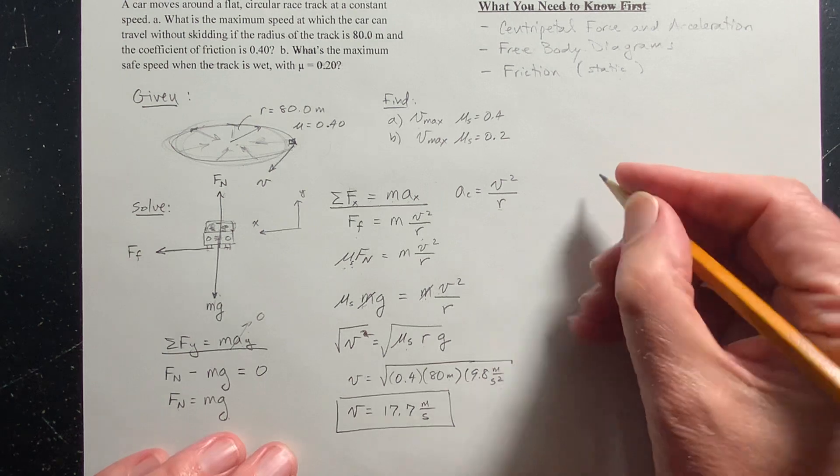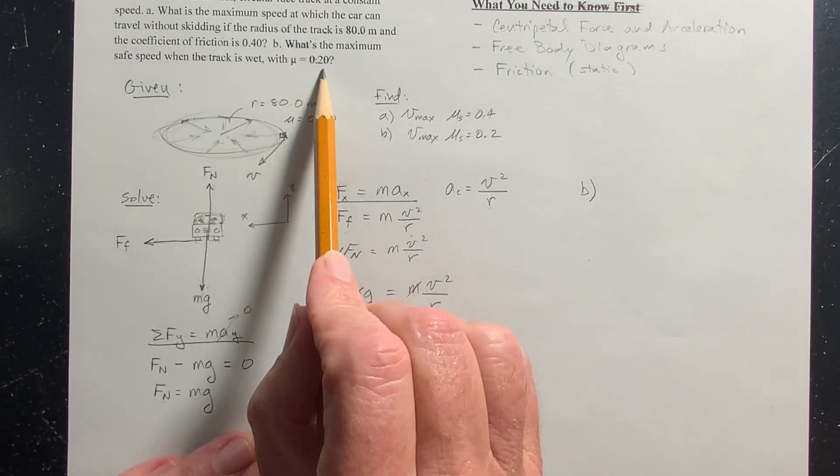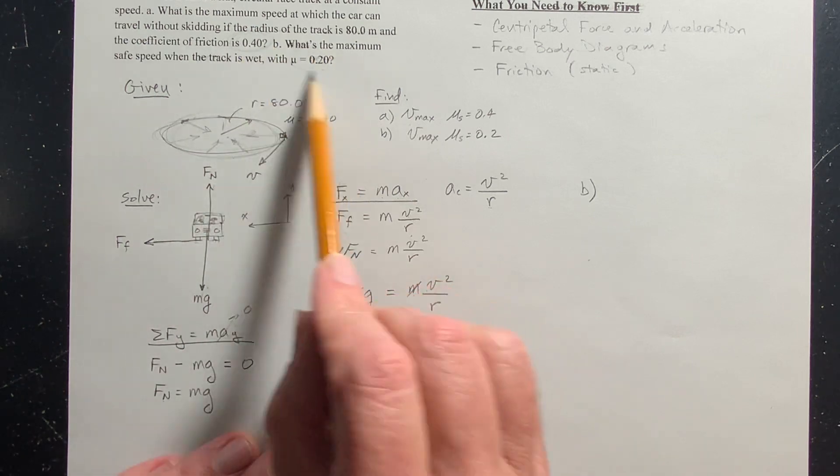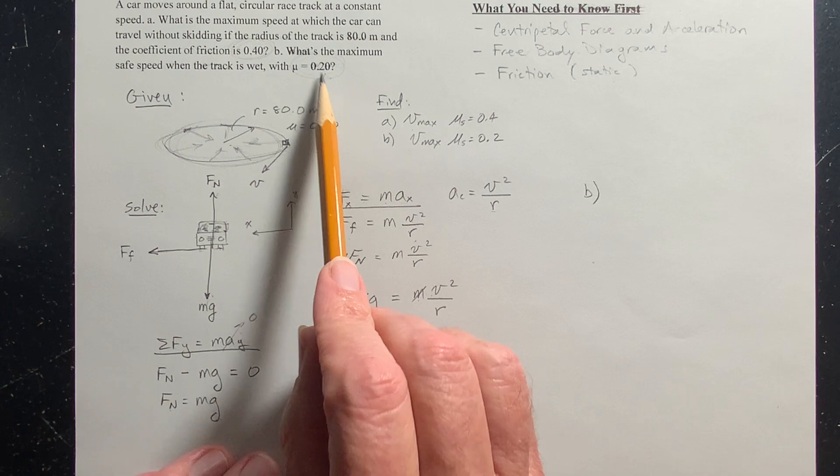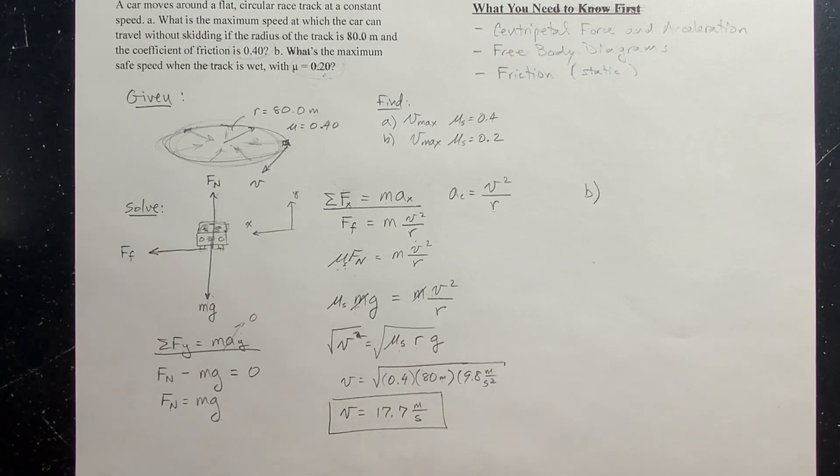For part b, if I notice here that the coefficient of friction is half. Here the coefficient of friction is 0.4 and here it's 0.2. So you might think, oh well, we've got half the coefficient of friction. So that must mean it's half the speed, right? And that would be wrong. You have to be really careful because where is the coefficient of friction located? It's located under this square root. It gets square rooted. So if it's half as big, if the coefficient of friction is half, the maximum velocity allowed is going to be what it was divided by the square root of two, not divided by two, but divided by the square root of two.